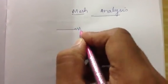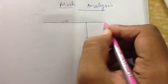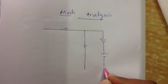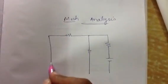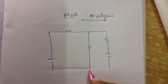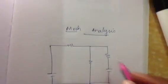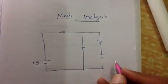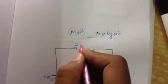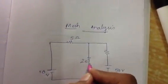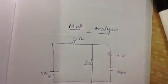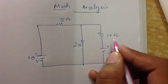Consider a circuit — just a random drawing. Let's put another voltage source and add resistances. Let's put 10 volts here and 50 volts here, and some 5 ohms, 2 ohms, and 10 ohms. So these are the voltages and the 5 ohms, 2 ohms, and 10 ohms are the resistances.